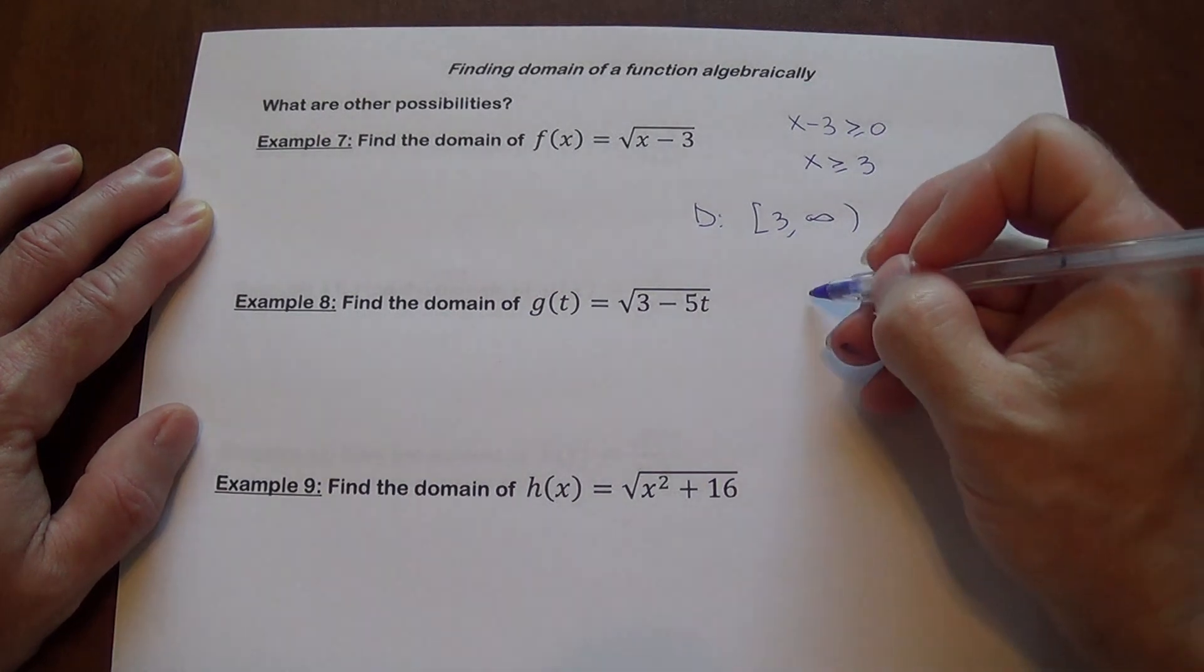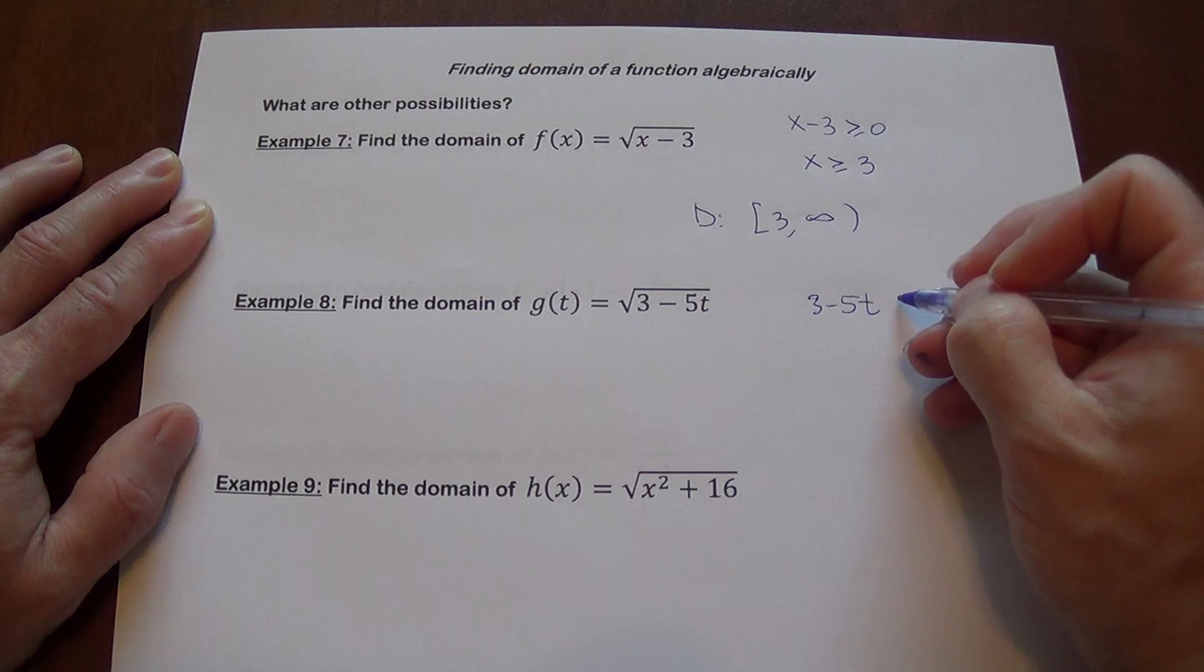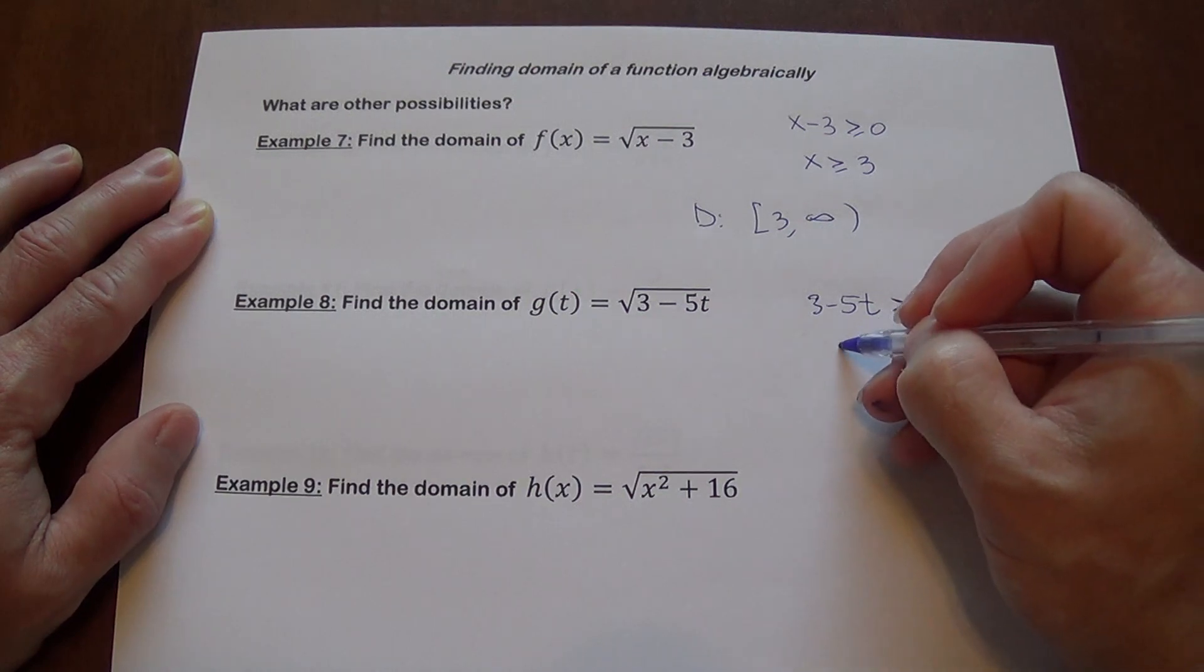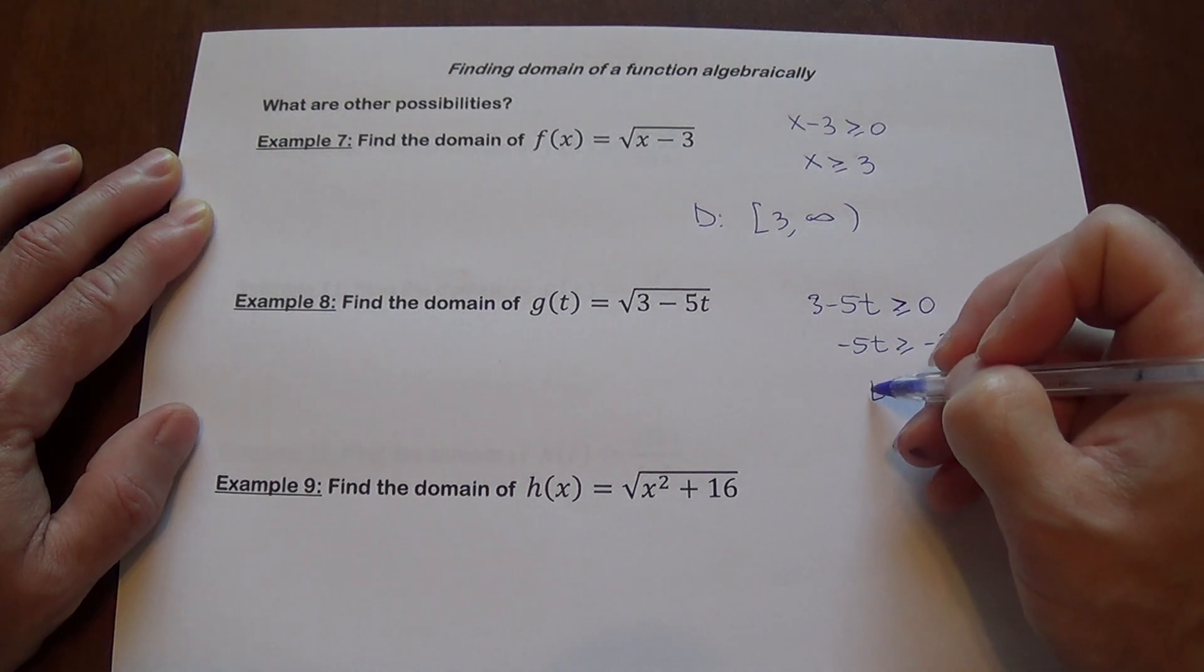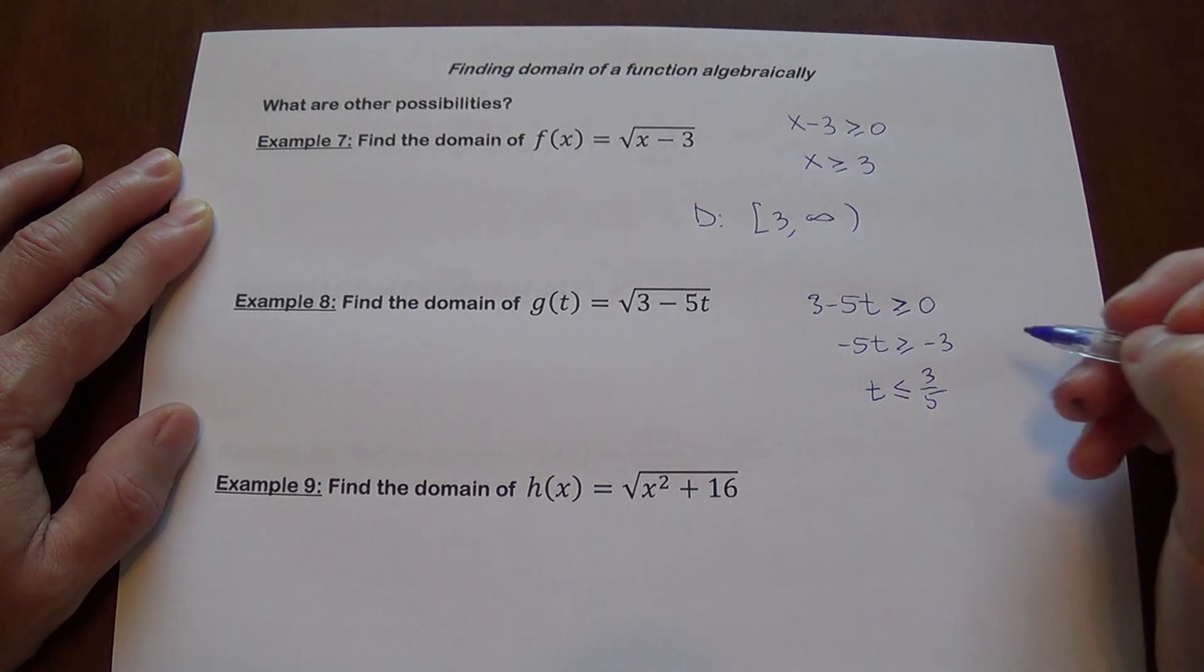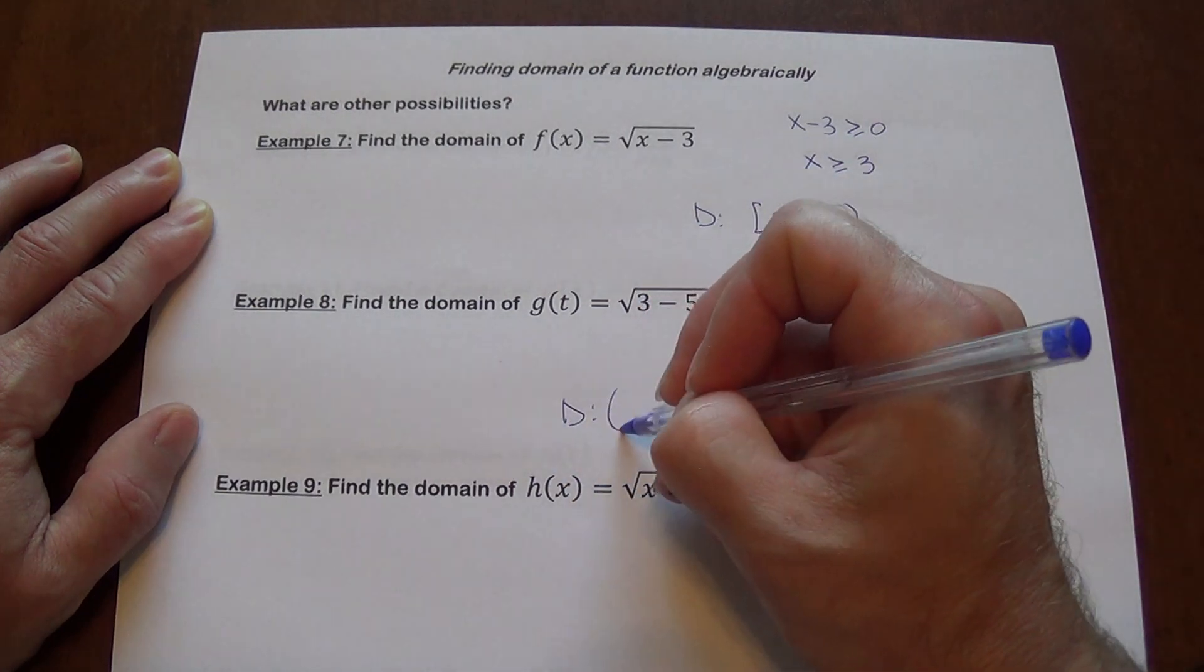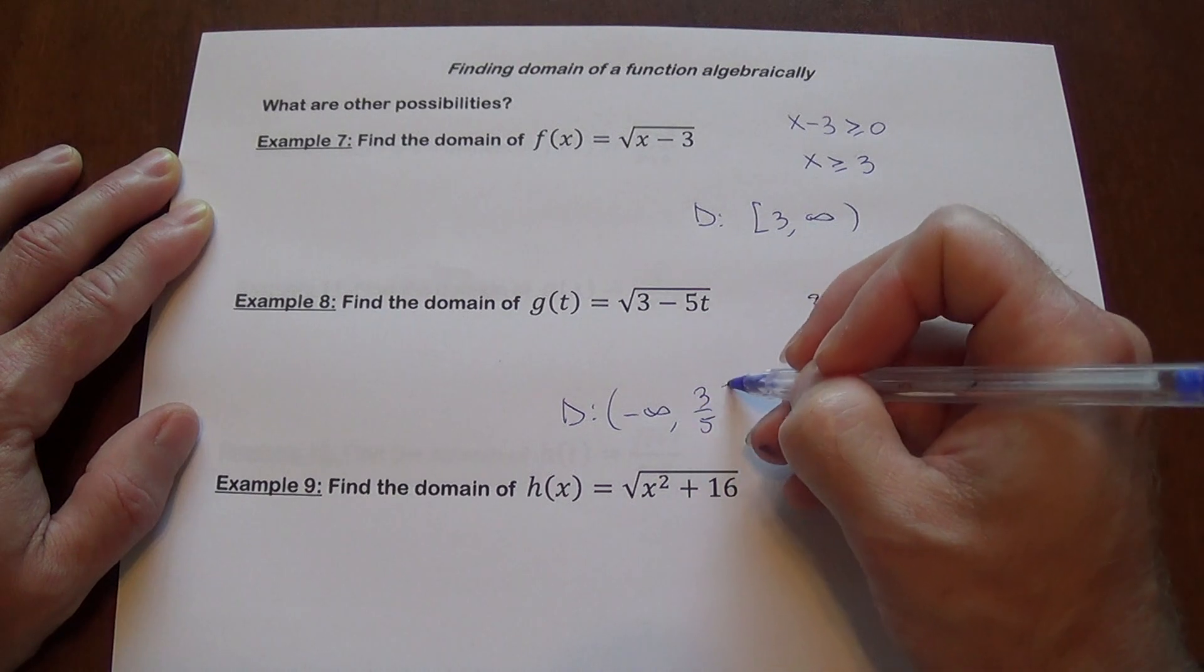Do the same thing here. 3 minus 5t, please note I'm using t, it doesn't change anything. You want it to be greater than or equal to zero. So we have negative 5t greater than or equal to negative 3. That means t is less than or equal to, you're dividing by negative 5, positive 3 fifth. So in this case, the domain is going to be from negative infinity to 3 fifth included.